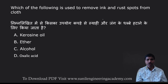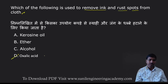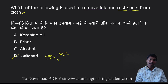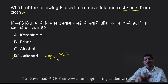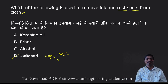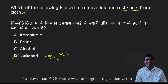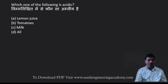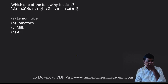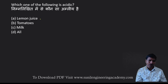Which of the following is used to remove ink stains and rust marks from cloth? For this we use oxalic acid, with the formula HOOC-COOH. It is present in tomatoes. In the following, which substances are acidic in nature? Lemon juice — acidic. Tomatoes — acidic. Milk — also slightly acidic.